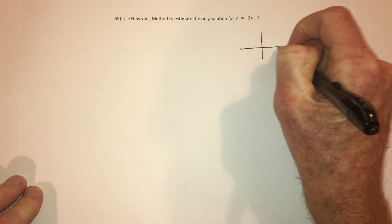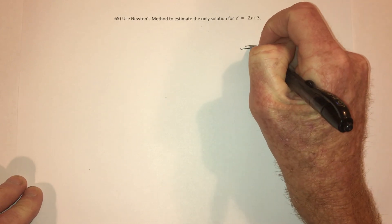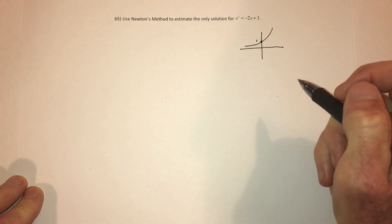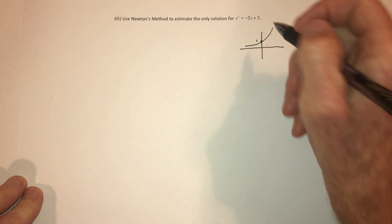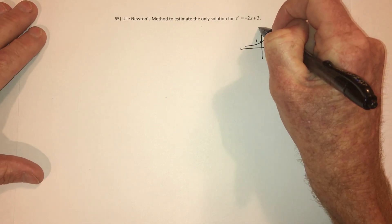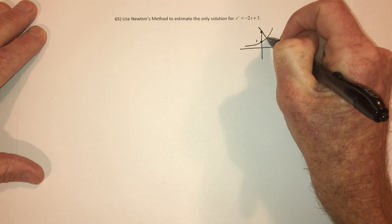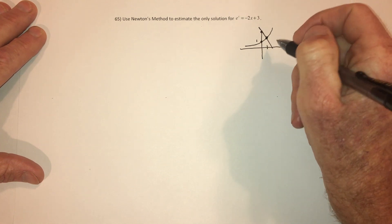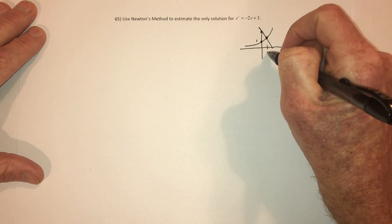So I need an estimate for the answer. e to the x goes like this, and it crosses the y-axis right here at 1. Negative 2x plus 3 means that you go up to 3, and then you've got a line that's going down. So they're going to cross right here, and I'm just going to guess that that's going to be 1.